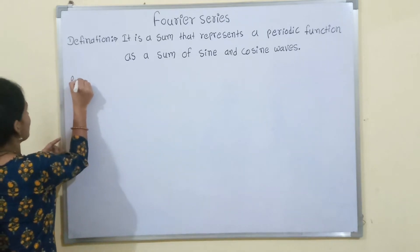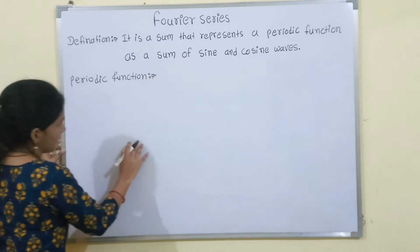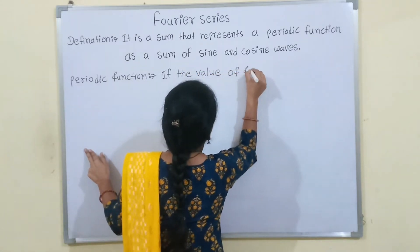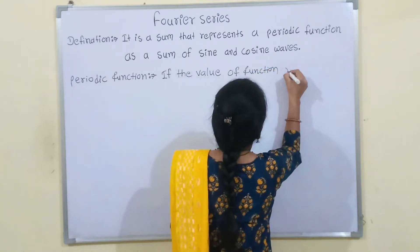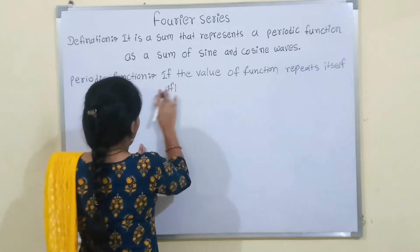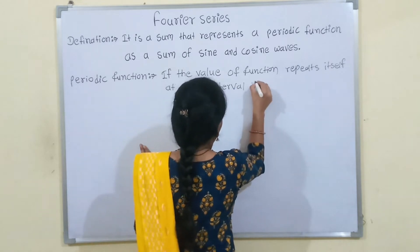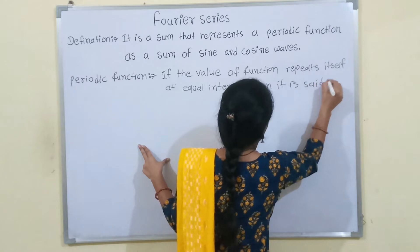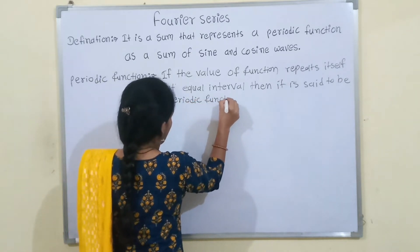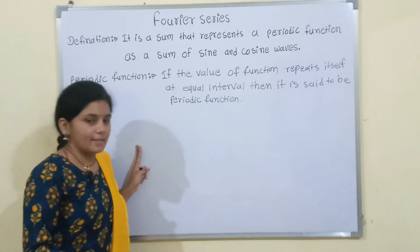We will see what is meant by periodic function. First we will see the definition: if the value of a function repeats itself at equal intervals, then it is said to be a periodic function. If we have any function and it repeats itself after equal intervals, then it is said to be a periodic function.